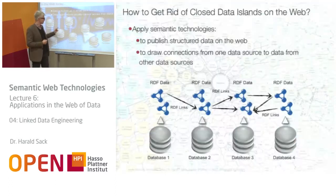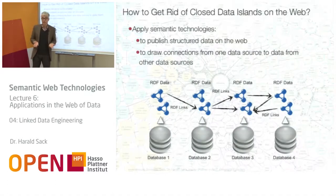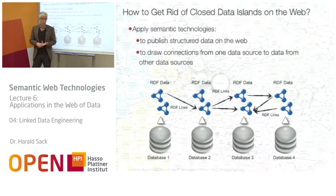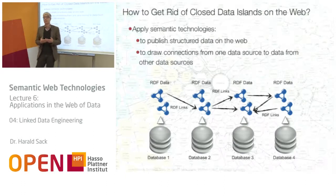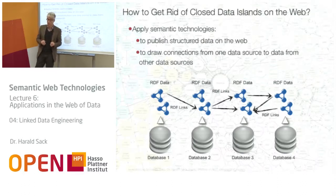We already know the solution to this problem: semantic technologies. We can use semantic technologies to publish structured data on the web, simply by translating this data into RDF and OWL ontologies, and then publishing it as RDF-based data. We can then draw connections from one data source to data from another data source, and what we come up with is so-called linked data. To publish linked data, there are rules and best practices, and now we want to talk about these best practices.